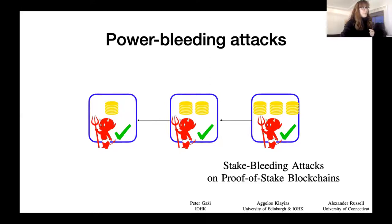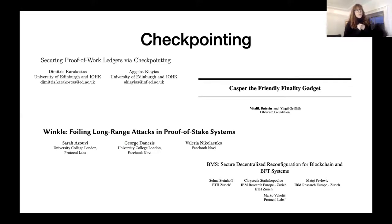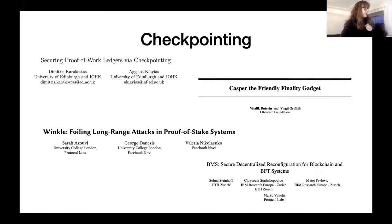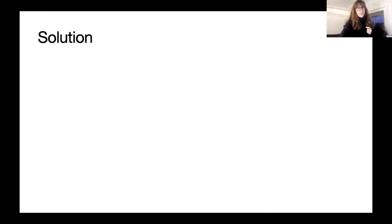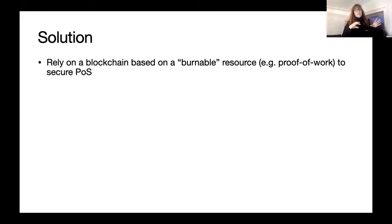In order to solve these attacks, the proof-of-stake community often presents checkpointing as a solution: even if an adversary manages to change the chain, a checkpoint allows detecting which is the honest one. For us, we will use the BMS paper by Marco and his co-authors from IBM. Different papers give different guarantees in terms of efficiency, security, and assumptions.